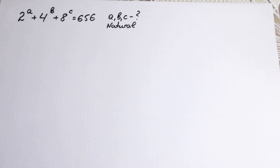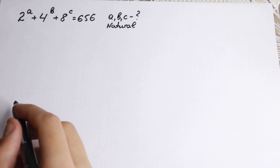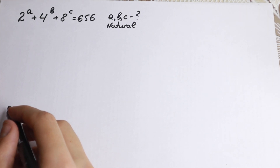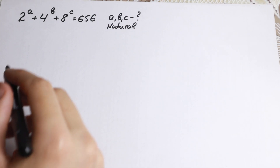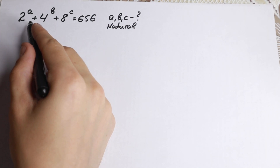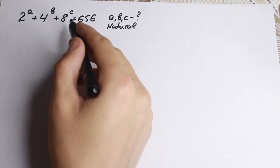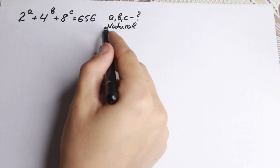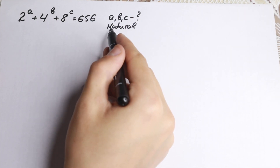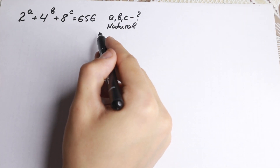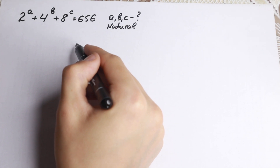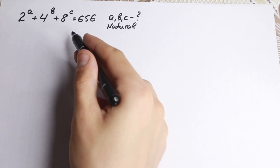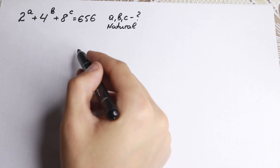Hello my friend, happy to see you here. In this video I'm going to solve this interesting problem. We have 2 to the a plus 4 to the b plus 8 to the c equal to 656. What are the natural roots a, b, c? Let's try to find these natural roots.